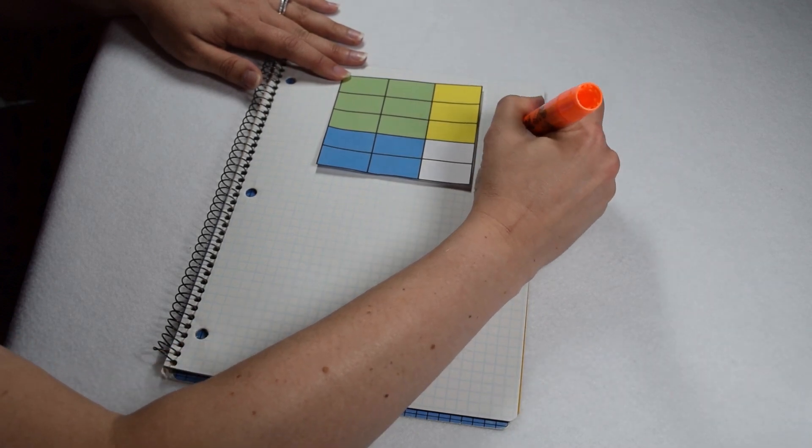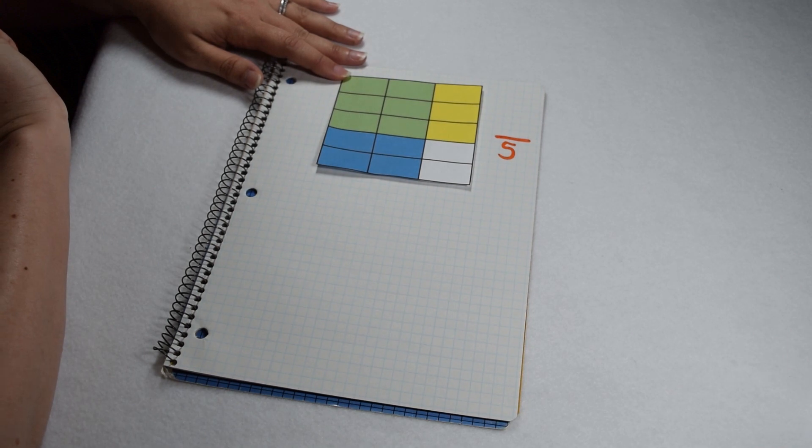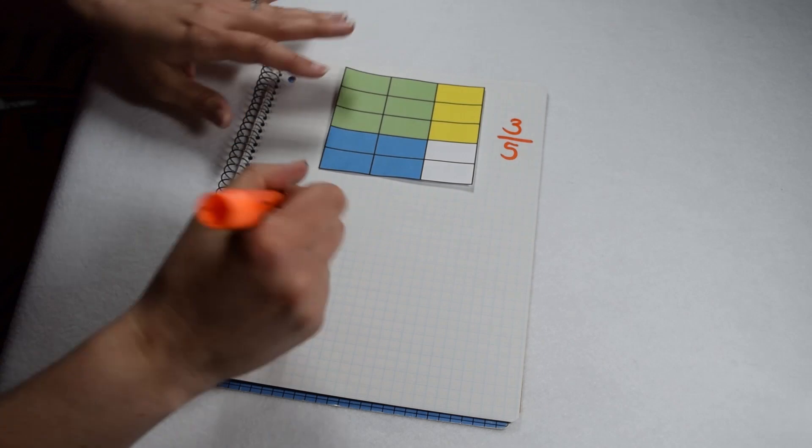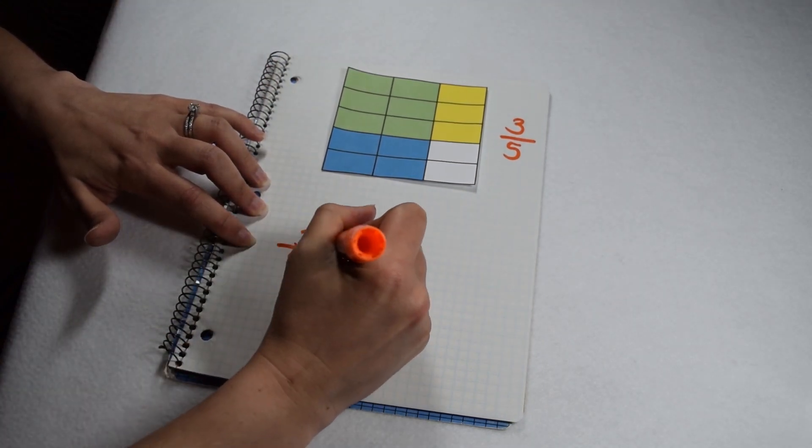5 rows, so we know our denominator is going to be 5. Of those 5 rows, 1, 2, 3 of them are shaded. So the first number in our multiplication problem is 3/5.